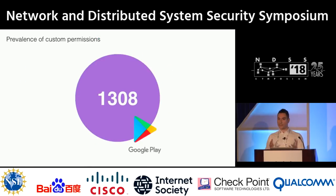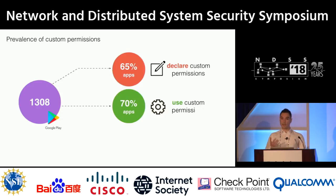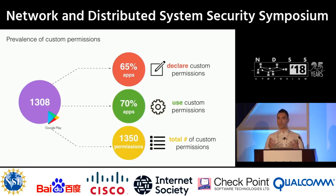To find out how prevalent this security feature is on the Android ecosystem, we downloaded the top-free applications from all the Google Play categories, yielding a total of 1,300 apps that we were able to decompile and analyze. Out of those, we found that 65% declare custom permissions in the system, 70% actually request and use them for their operations, and in total, we found 1,150 custom permissions declared by these applications. The takeaway here is that custom permissions is a very widely used security feature on the Android ecosystem.